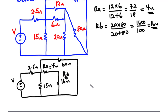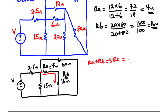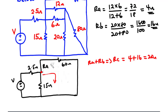Now we've reduced the complexity of the circuit. Ra and Rb are connected in series because the same current flows through both the 4-ohm and 16-ohm resistors. Their combined resistance is Rc = Ra + Rb = 4 + 16 = 20 ohms. We clear Ra and Rb and replace them with Rc, which is 20 ohms.